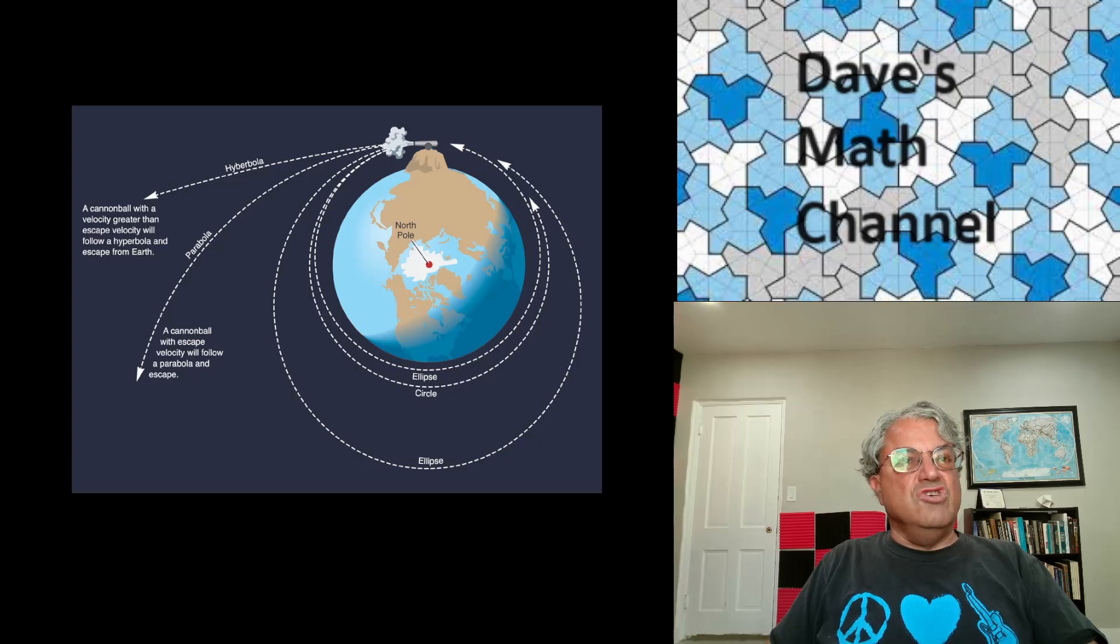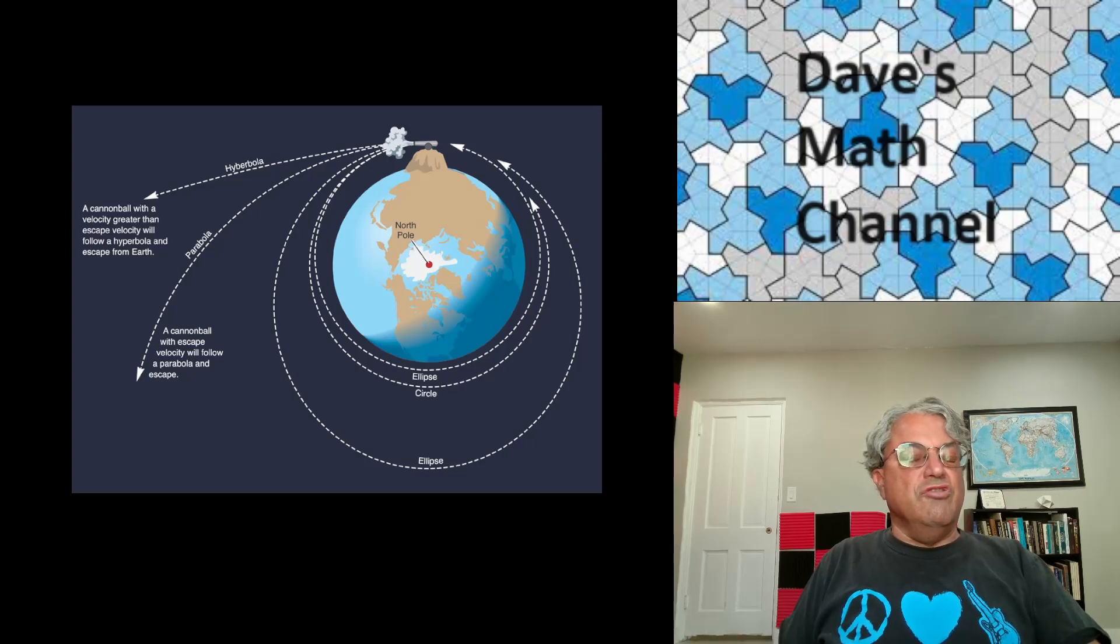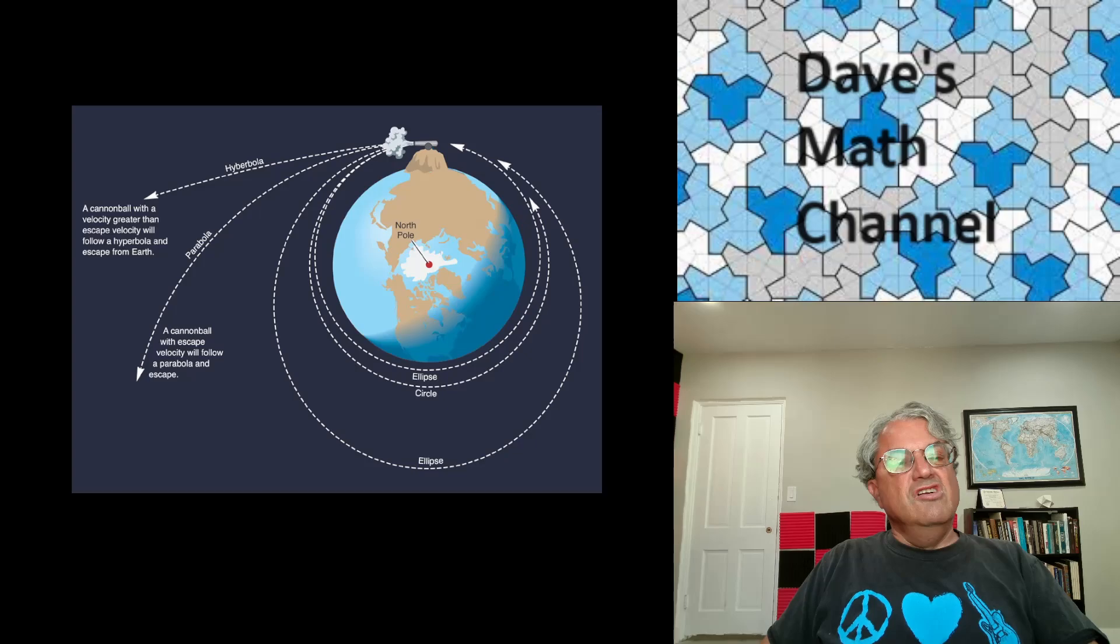The planets are all ellipses. The orbits of the planets are all ellipses, with the sun as one of its foci. And similarly, if you had a satellite orbiting the earth, it's the same idea. If it's a satellite that doesn't escape from the earth, then its orbit is also an ellipse, with the center of the earth as one of its foci.